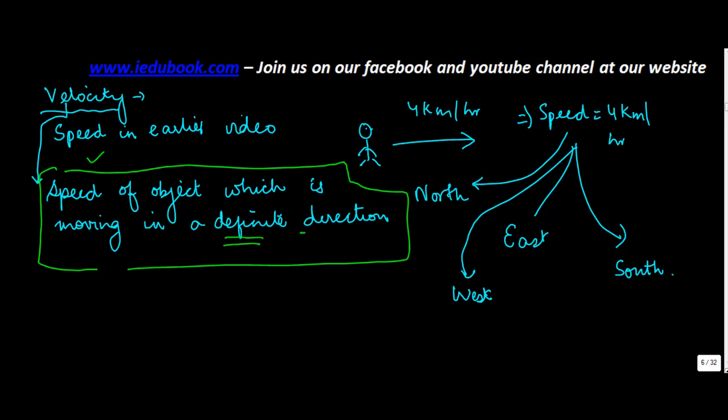Velocity, just like speed, also has the same units like meters per second. And velocity can also be uniform or non-uniform. So when you are moving at a constant rate, constant speed in a definite direction, it's said to be uniform, or else it's non-uniform.